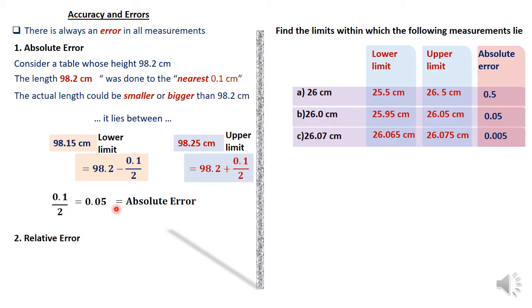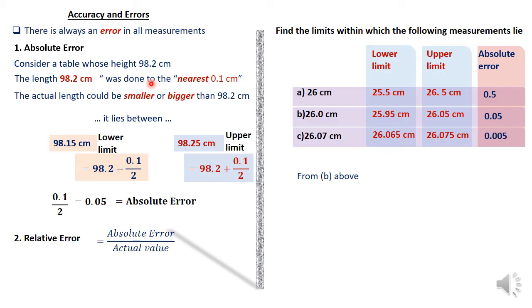The other concept we should look at is relative error, which is normally given by the absolute error divided by the actual value given. For the table example, that is 0.05 divided by 98.2. For part B, the 26.0 case, the relative error will be 0.05 divided by 26.0, which equals approximately 0.001923.